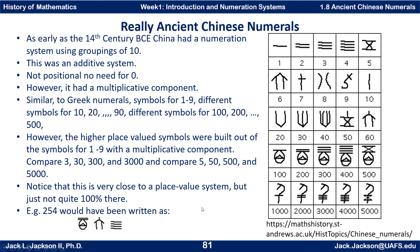The really ancient Chinese numerals were based on symbols you see in this chart here. It was an additive system, with no positional value and no place value. So there's no need for a zero as a placeholder. It's kind of like the Greek numerals, where you have symbols for one through nine, grouped in tens, like the Greeks, Romans, or Egyptians — not like the Babylonians.